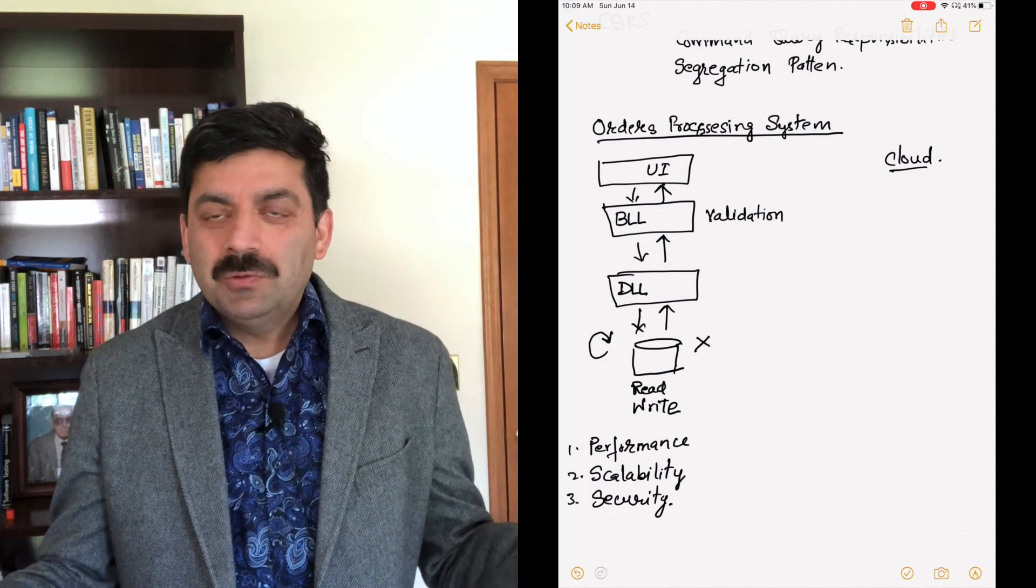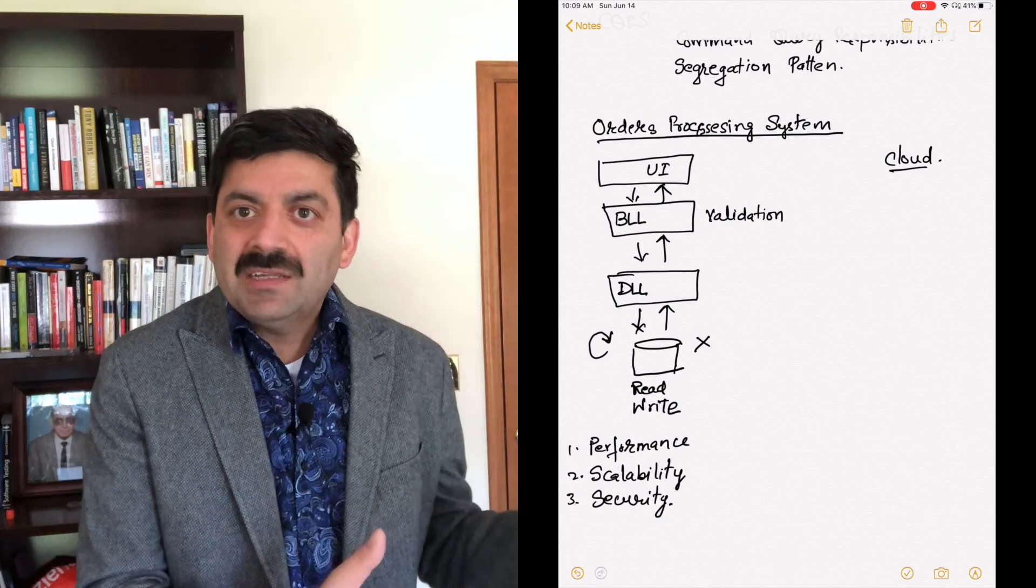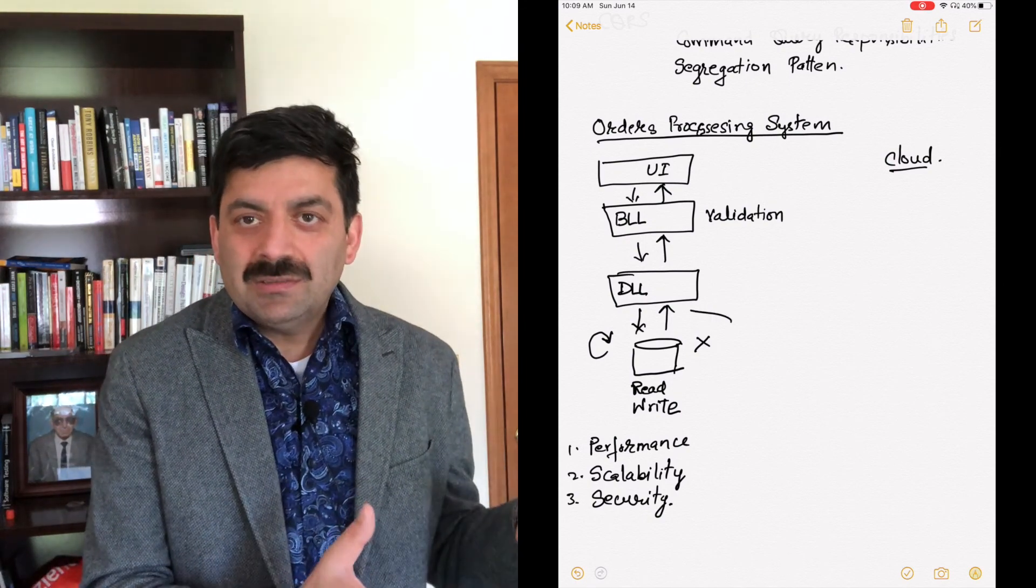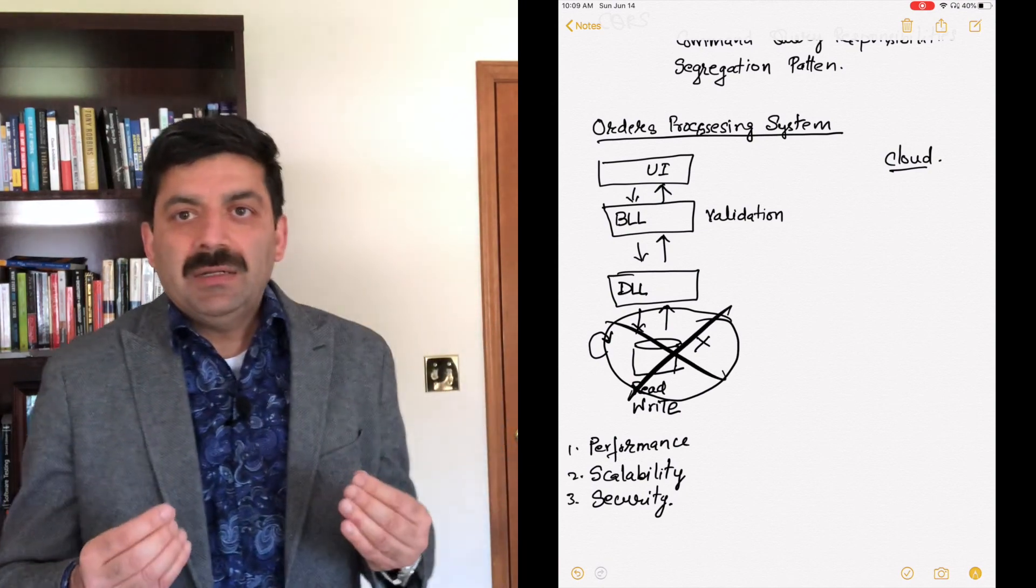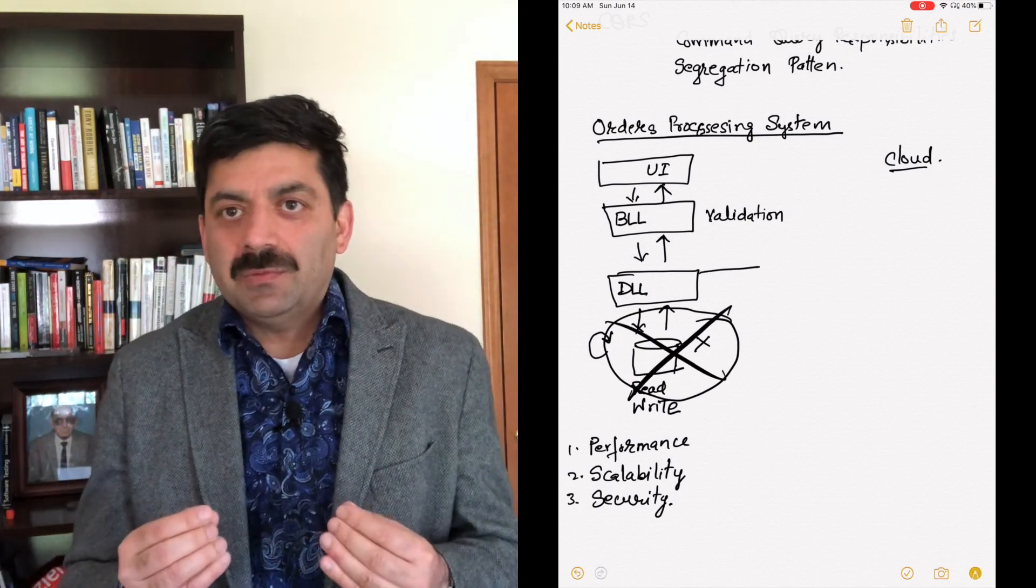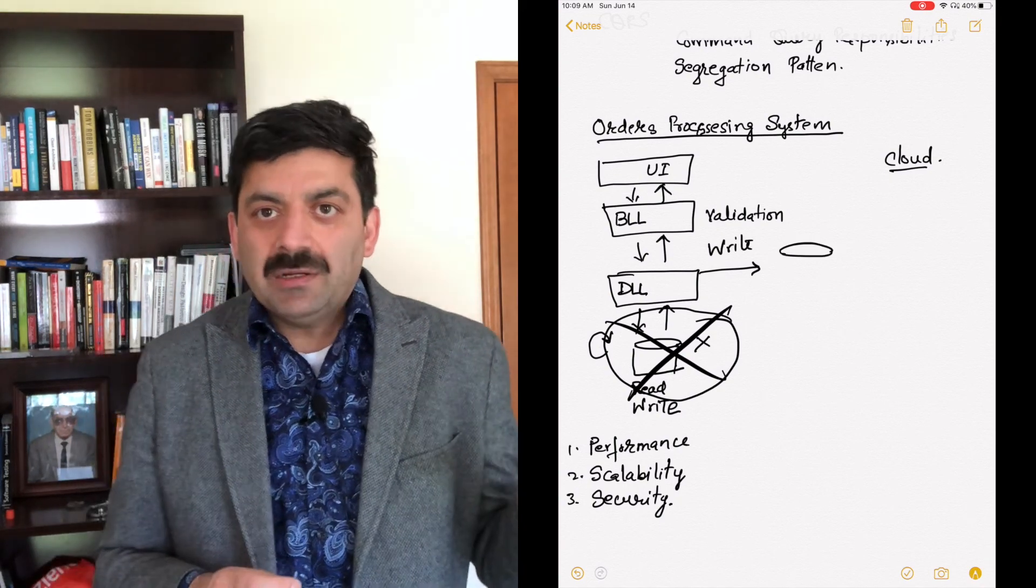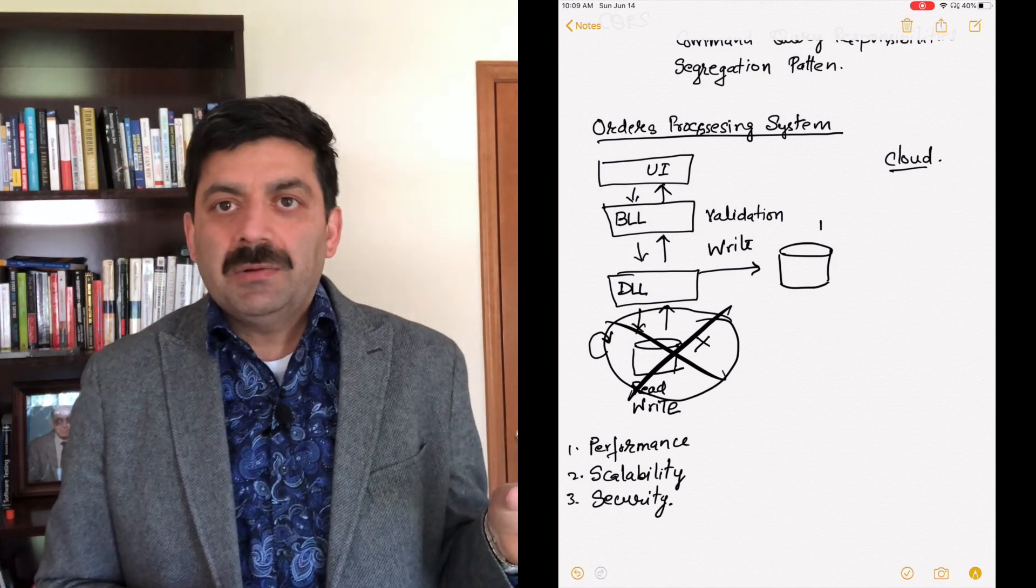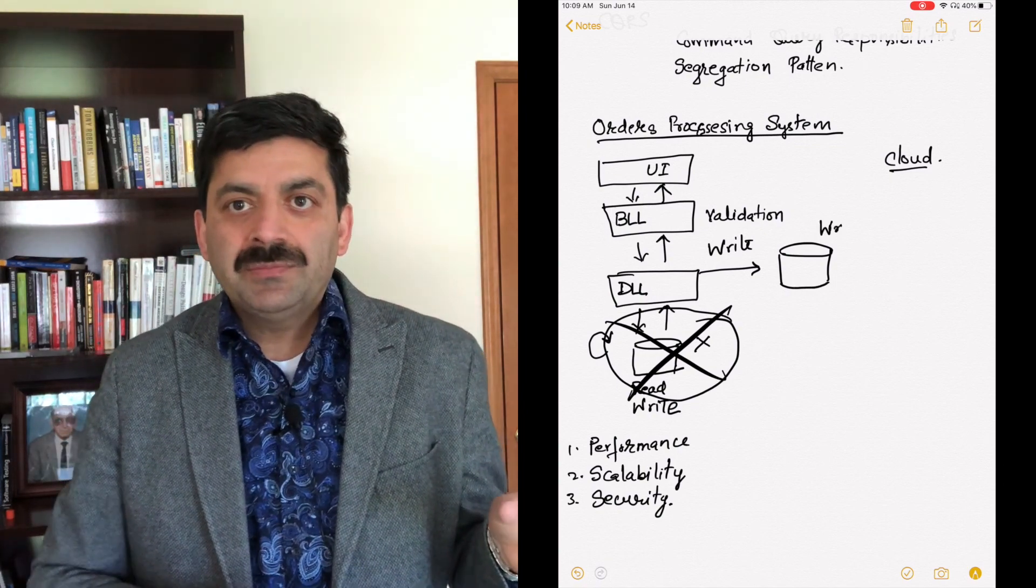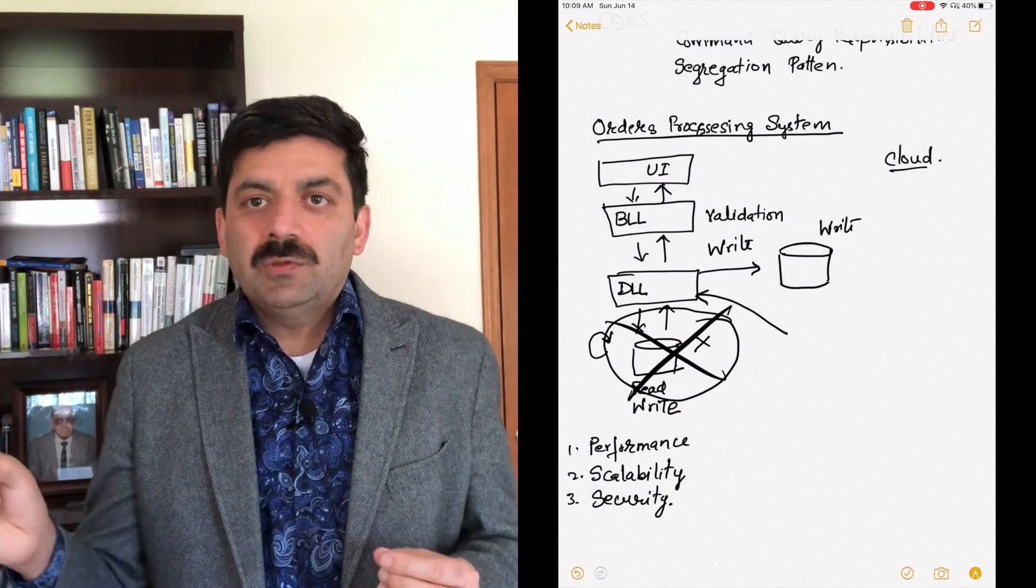The solution is simple. Have two databases. One for writing the database, writing orders, and one for reading the orders. So that's what Command Query Segregation is. Responsibilities are separated. So you write command components which are separate, which are just responsible for updating data in the database.